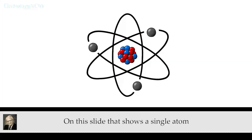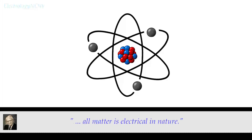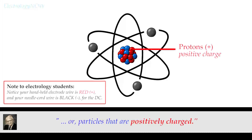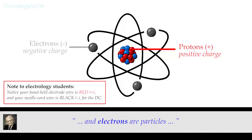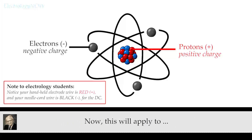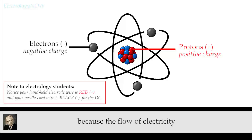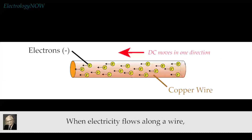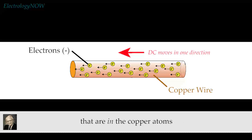On this slide it shows a single atom. According to this theory, all matter is electrical in nature. The atom is divided into protons — particles that are positively charged — and electrons, or particles that are negatively charged. This applies to our current electricity also, because the flow of electricity is a flow of electrons. When electricity flows along a wire, it's the electrons that are in the copper atoms that are doing the moving.